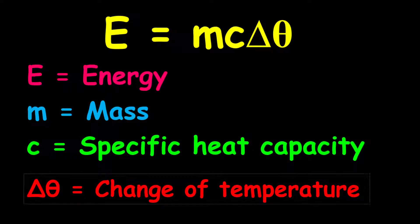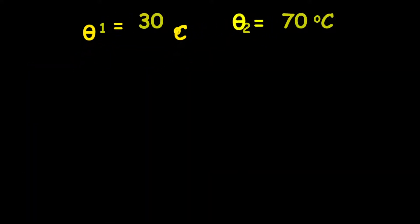We're only going to focus on the change in temperature to prove our point. So let's take, for example, two temperatures: the initial temperature of 30 degrees Celsius and the final temperature of 70 degrees Celsius.